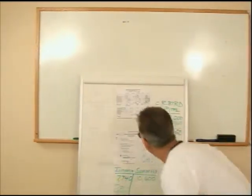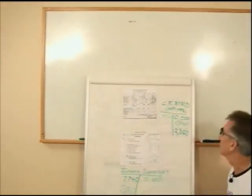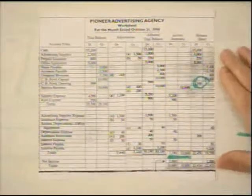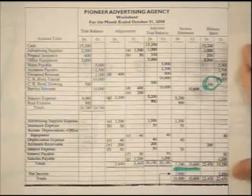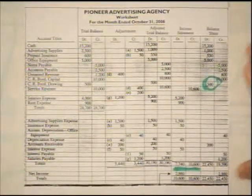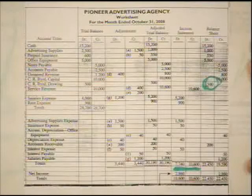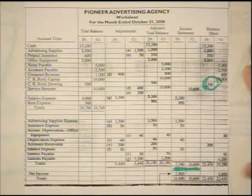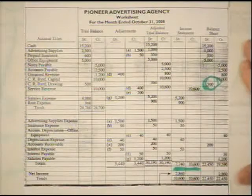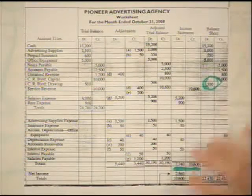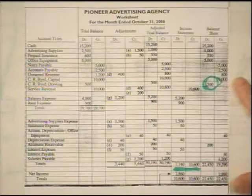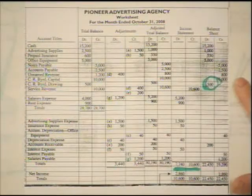Let's take a look at the closing entries. I want to go back to the original worksheet that we had in the last class, and what I want to remind you of is that this is really the starting point for our four closing entries. The importance of this worksheet is that once we complete it, we have all of our numbers in one place to complete our financial statements.